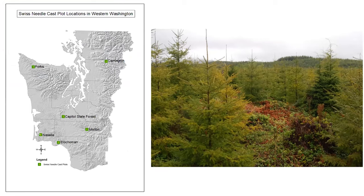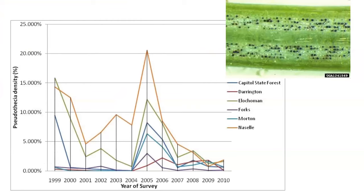In the decade of the aughts, we employed a different strategy for monitoring: establishing permanent plots, tagging trees, and following them over time. Six sites were selected — two on the coast, two interior at Capital Forest and Loch Lamond, and two on the west slopes of the Cascades. Not surprisingly, the sites nearest the coast had the highest levels of the pathogen. But with the exception of 1999 and 2005, the average pseudothesia density was well below 5%, a level we would consider very light.